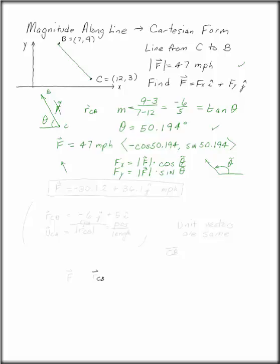So that is, if we multiply that out, we have the Cartesian form for F. 30.1i in the negative I direction plus 36.1j miles per hour.